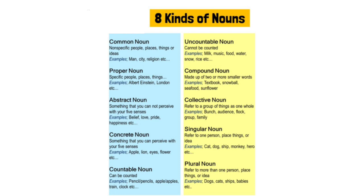For example, 'textbook' is made with two words. Some more examples of compound nouns: snowball, seafood, sunflower.